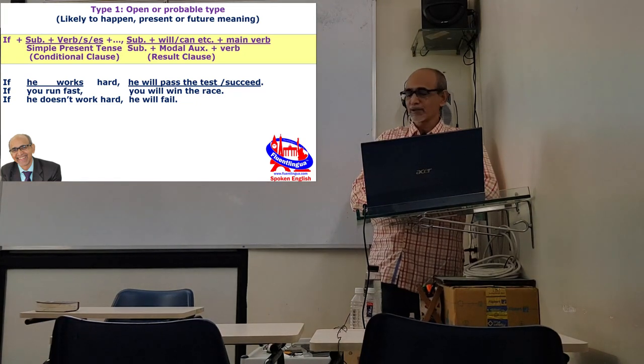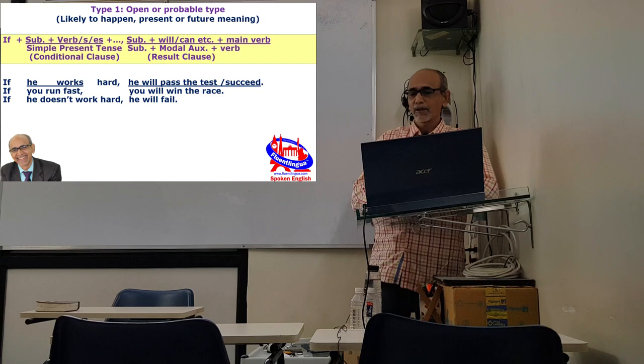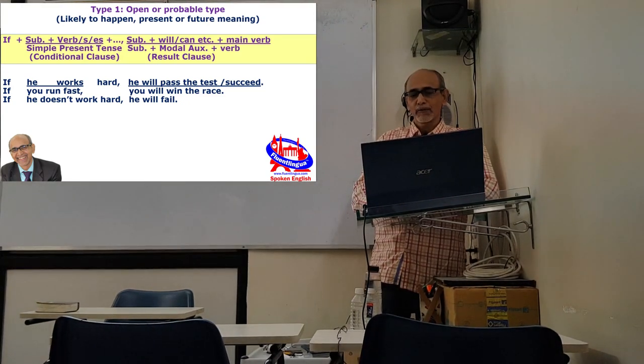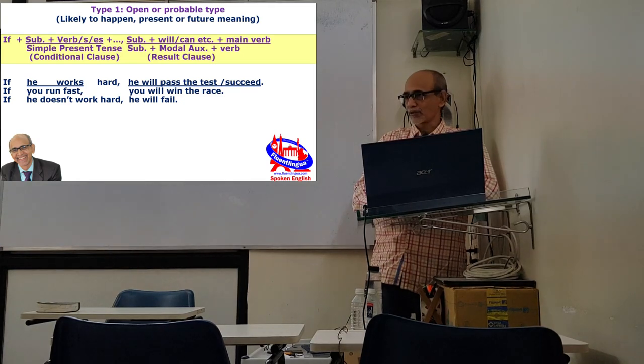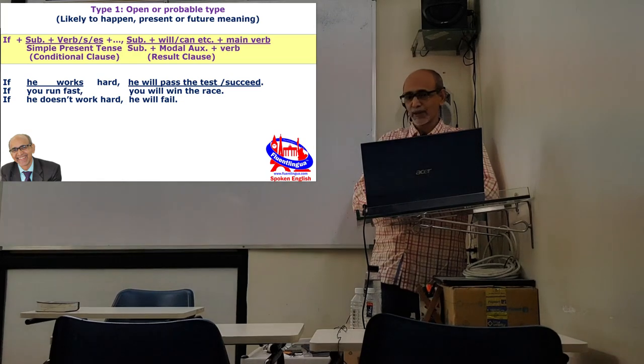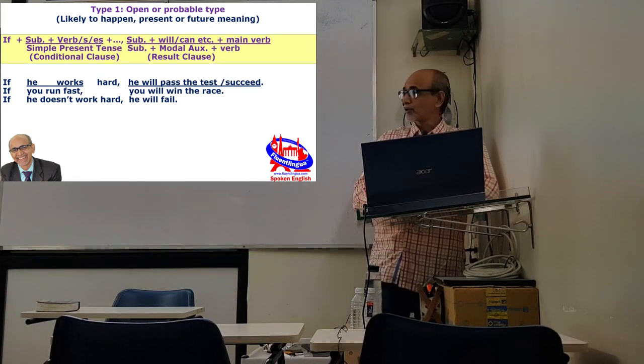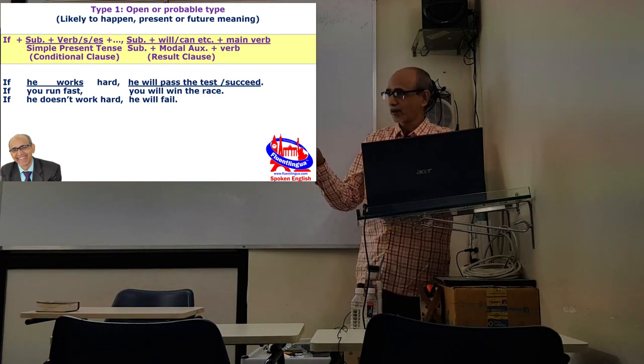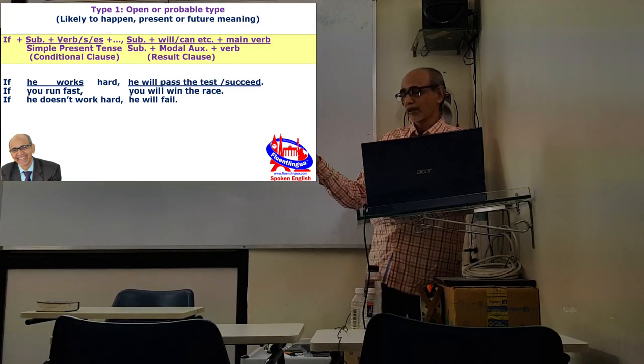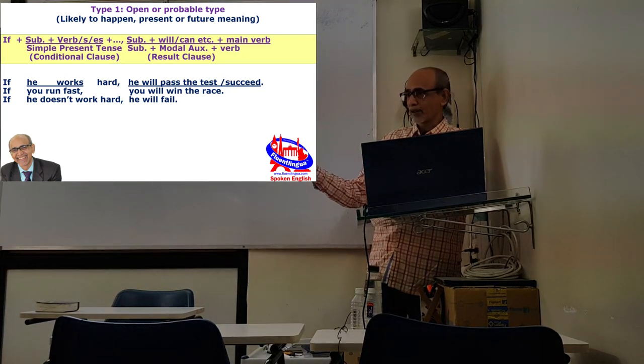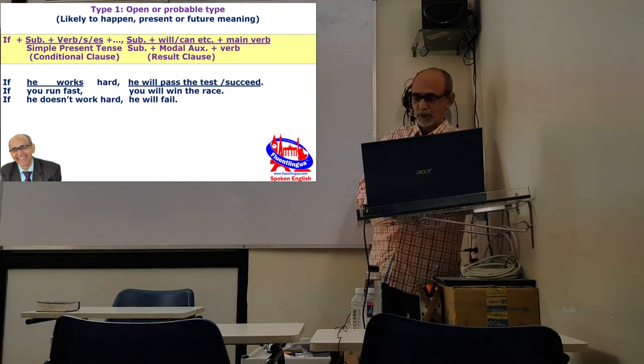You can see the example sentence: if he works hard, he will pass the test. If he works hard, that is simple present, and he will pass the test or he can pass the test or he may pass the test, according to meaning we can take. This condition is for either present time or future time and it is likely to happen. We are talking about an average person: if he works hard, he will succeed. If you run fast, you will win the race.